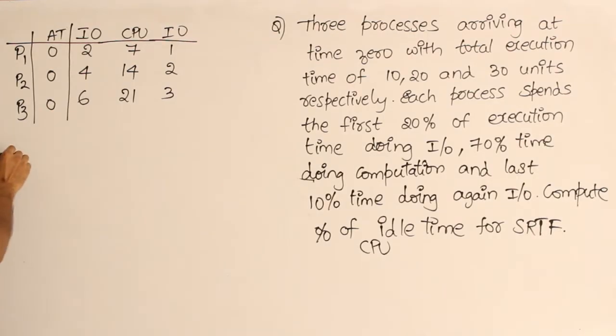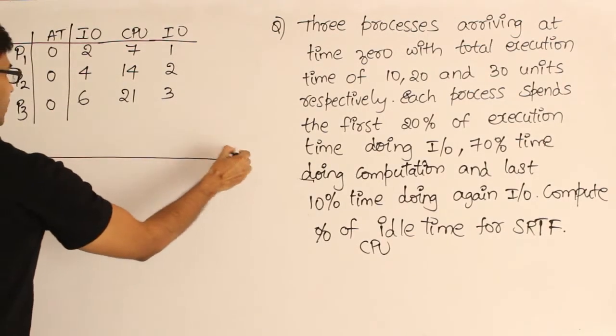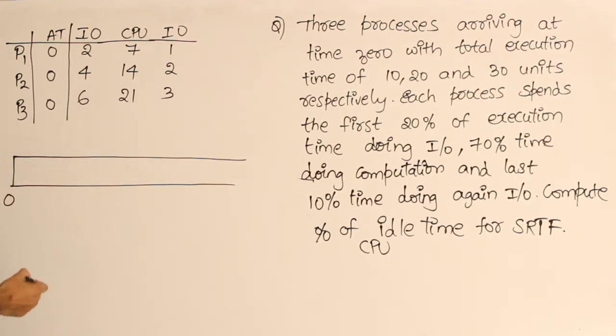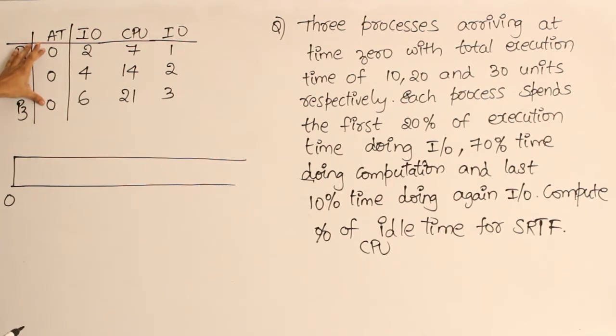Now we are going to use shortest remaining job first. Initially, if I start at zero, there is no process to execute. Even though all the processes are arriving at time zero, all of them want to perform I/O first.